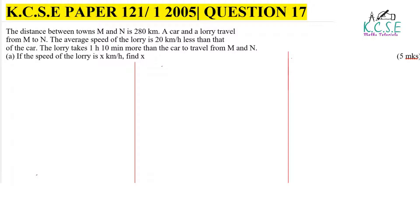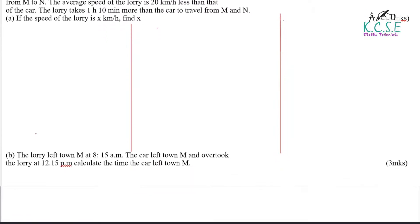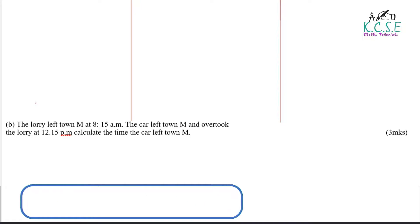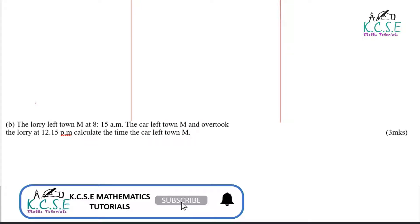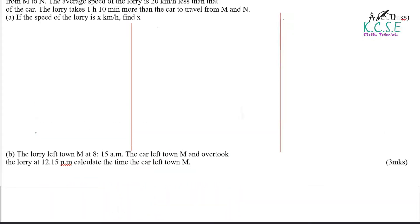Part A of the question: if the speed of the lorry is X kilometers per hour, find X. Part B of the question: the lorry left M at 8:15 AM. The car left town M and overtook the lorry at 12:15 PM. Calculate the time the car left town M.